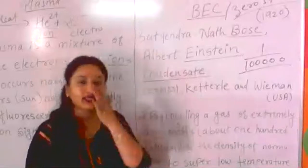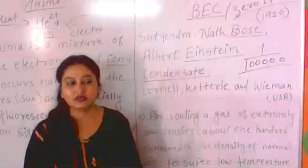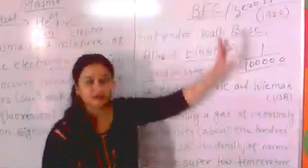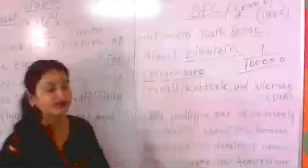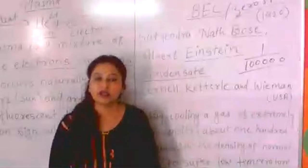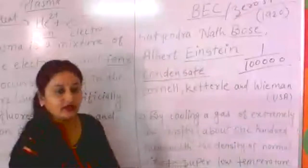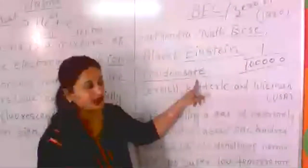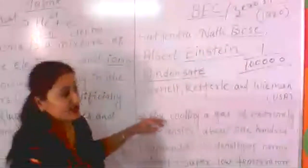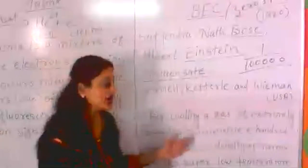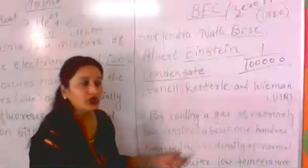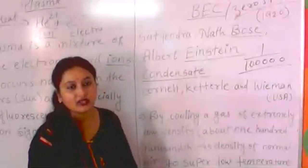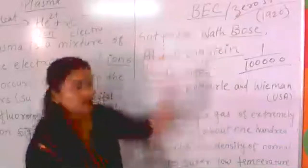So BEC is the fifth state of matter, which is a short abbreviation for Bose-Einstein Condensate. When scientists took a gas at extremely low density and cooled it to a very, very low temperature, they found a new state of matter beyond solid, liquid, or gas, and they gave it the name BEC.